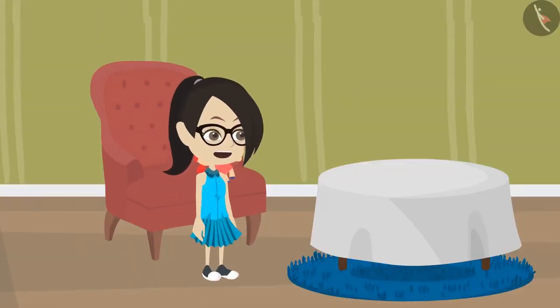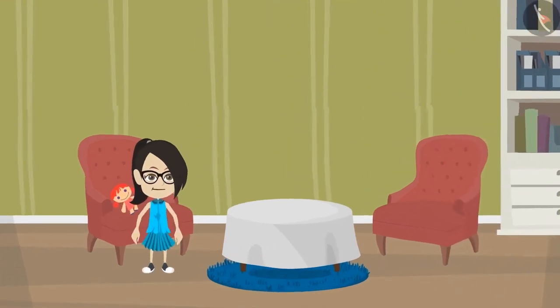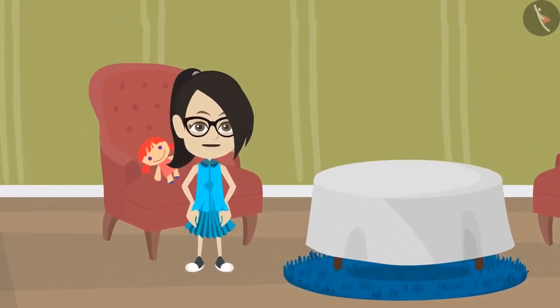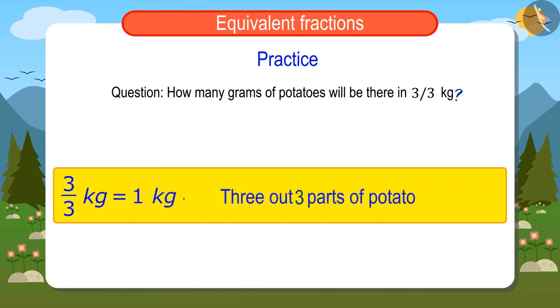Okay, Mammy, I will find out and get the potatoes. Let us together find out how many grams of potatoes will be there in 3 upon 3 kilograms. 3 upon 3 means 3 out of 3 parts. That is, of a kilogram of potatoes, all 3 parts.